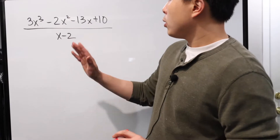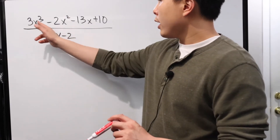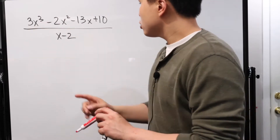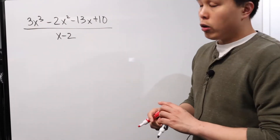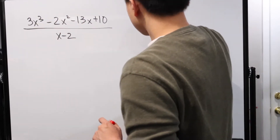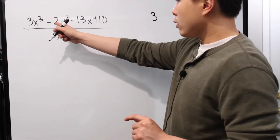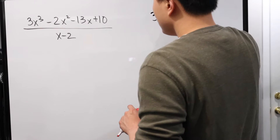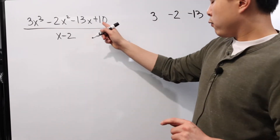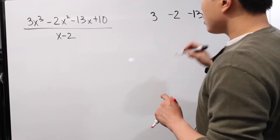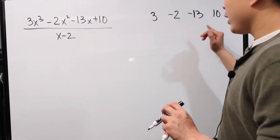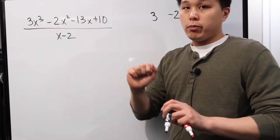First and foremost, in order to do synthetic division, you look at every single one of the coefficients — the number in front of the variables. So what we're going to do is write them all down. The first is three, the second is negative two, the third is negative thirteen, and the fourth is ten. Notice I excluded all the variables but wrote all the coefficients right next to each other in the order that you see them.